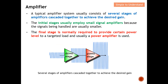A typical amplifier system usually consists of several stages of amplifiers cascaded together to achieve the desired gain. One stage may not be sufficient, so we add several stages together. For example in communications, the signal received from an antenna can be traveling kilometers away, making it very very weak. We need to cascade several stages of amplifier to boost the signal large enough to hear the voice.